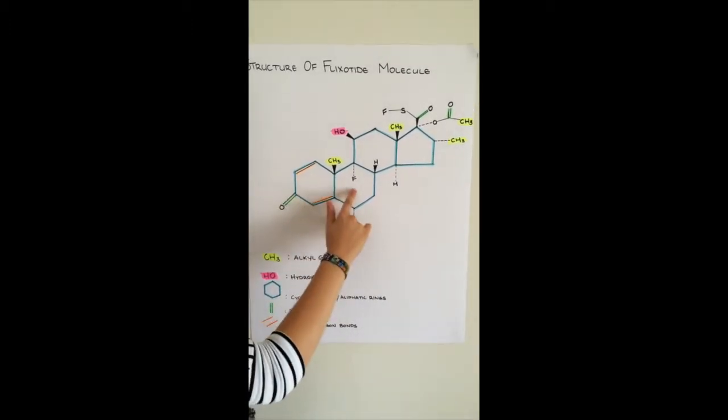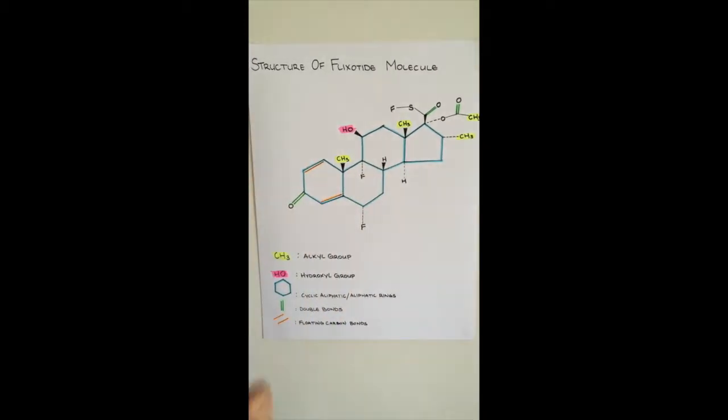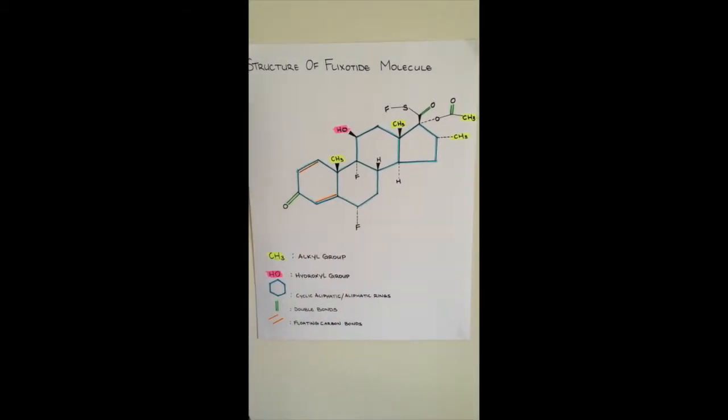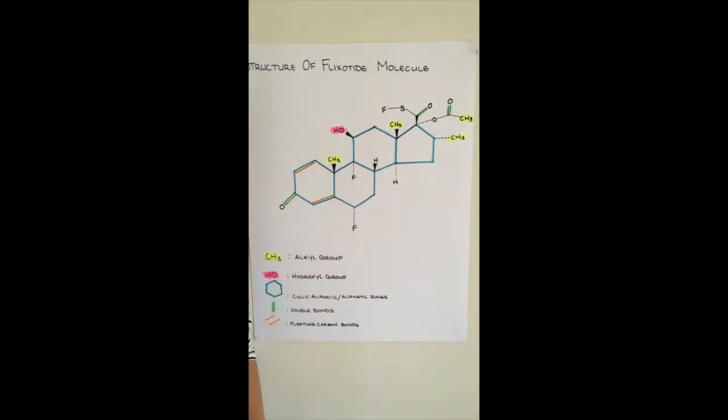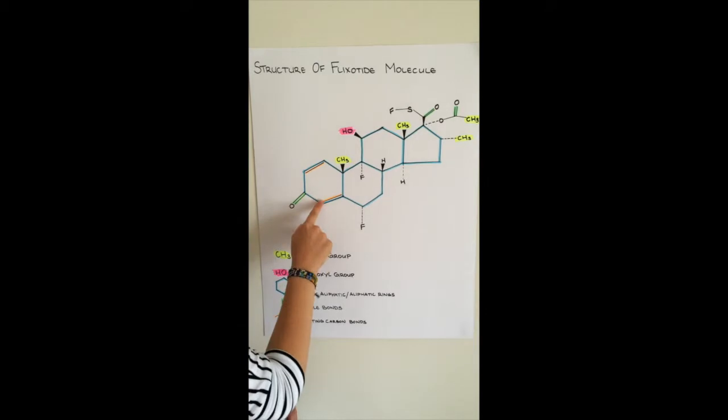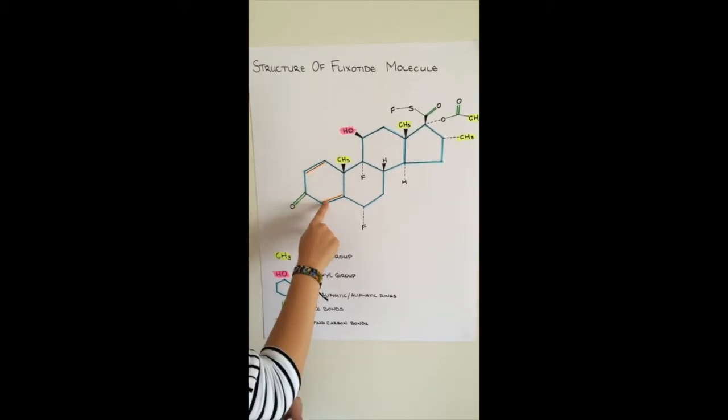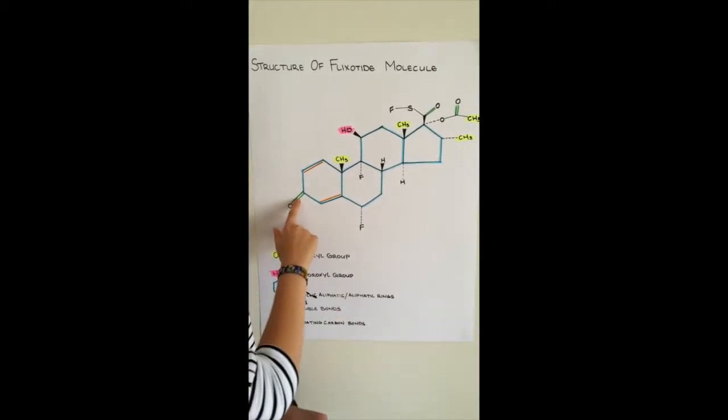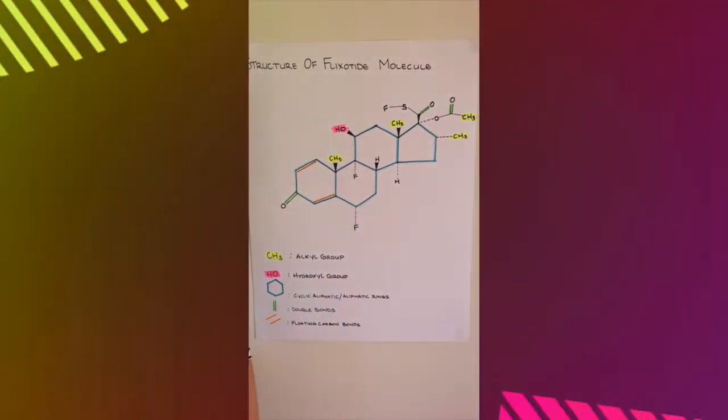Thirdly, we have these four ring-like structures and these are called alicyclic rings. In addition to the standard bonding structure, we have two different types of bonding. We have two floating carbon bonds here and we have three sets of double bonding.